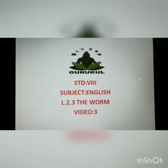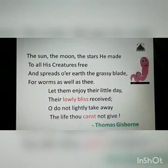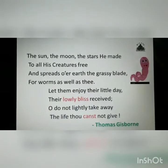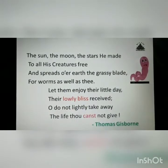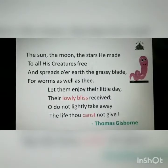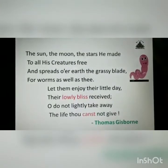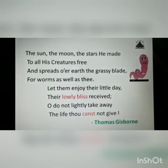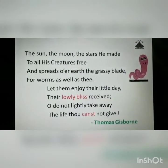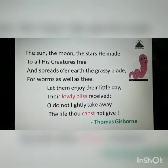In stanza three: 'The sun, the moon, the stars he made to all his creatures free' — God has given the sun, the moon, and the stars free to all his creatures. 'And spreads o'er earth the grassy blade for worms as well as thee' — God has spread the grass that grows over the earth for worms as well as for us, human beings.